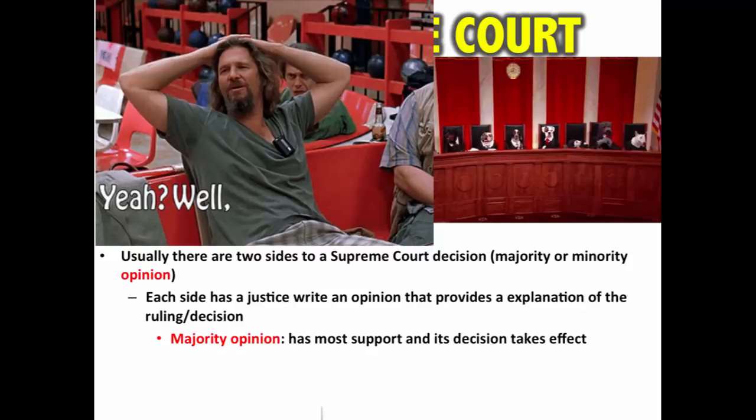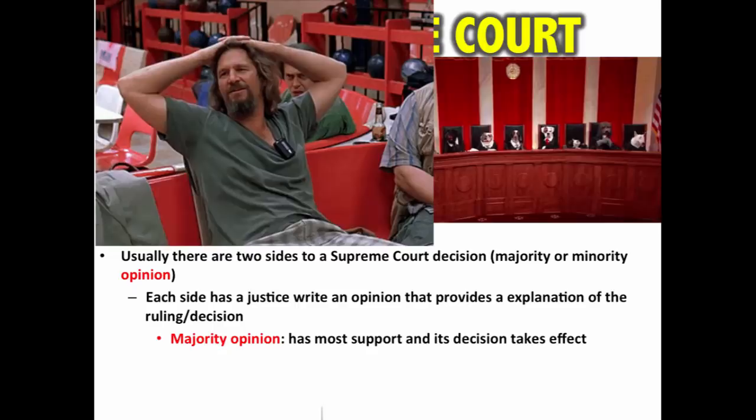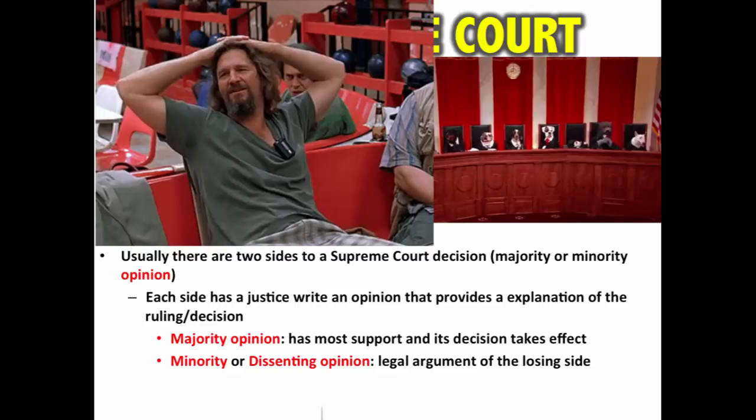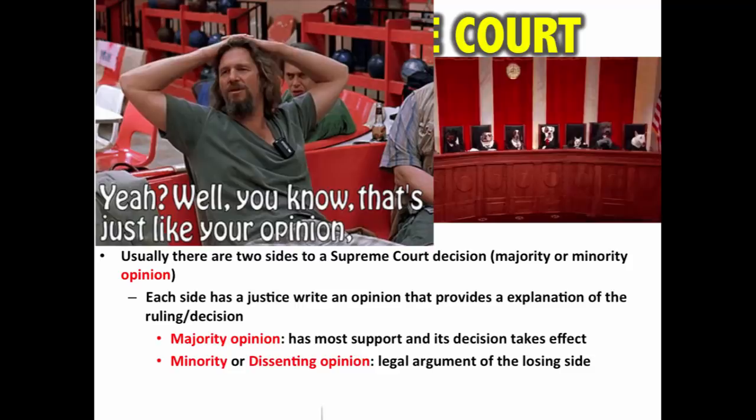The majority opinion has the rule of law, and the winning side's opinion serves as a guide for future court cases. There is also typically a minority or dissenting opinion, which is the legal argument of the losing side. This minority opinion can be referenced in future legal cases but does not have the rule of law — it gives rationale as to why the other judges disagreed with the majority.